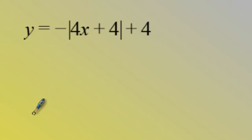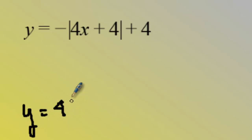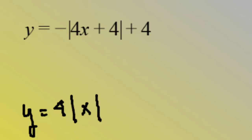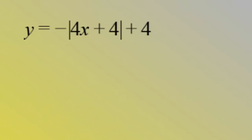I'll do a few examples where we graph these using transformations. We talked about the vertical stretch showing up outside the absolute value sign — for example, a four outside the absolute value sign is a vertical stretch of the graph and is actually the slope of the rays: a rise of four and a run of one.